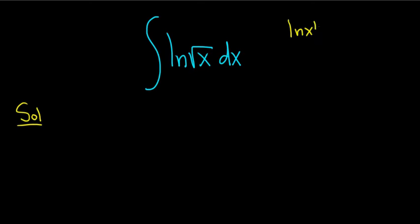If you have the natural log of x to a power, you can write that as p times the natural log of x. So in this case, we have the natural log of the square root of x. Well, the square root of x is really x to the 1 half power. And so what you can do is you can just put the 1 half in the front.